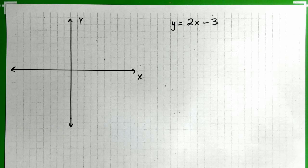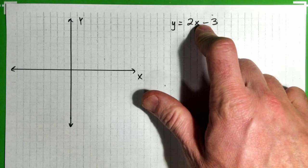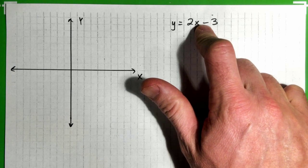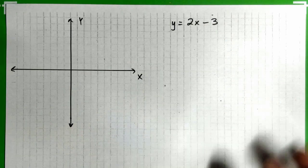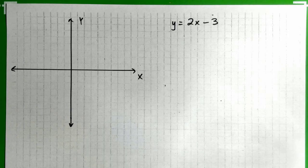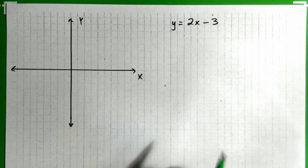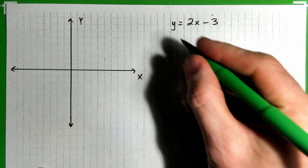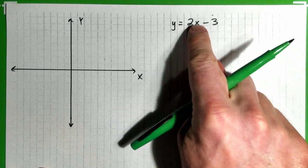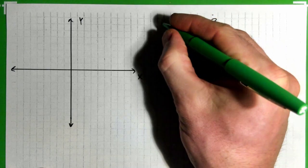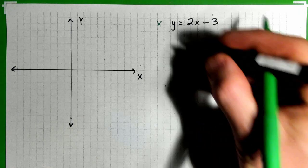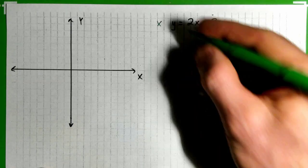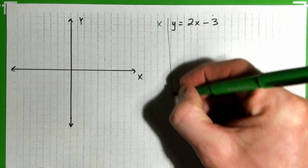In this video, we're going to graph y equals 2x minus 3, and then we're going to name the slope and the y-intercept after we've got our graph going. The trick is, you actually just make up a bunch of x values, calculate your y values, and then plot the points.